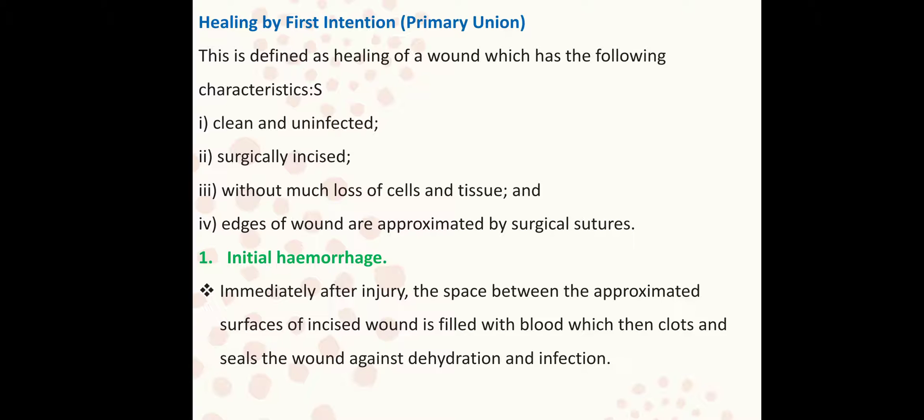There are five stages in healing by first intention. The first stage is initial hemorrhage. Hemorrhage means internal bleeding. Immediately after the injury, the space between the approximated surfaces of the wound is filled with blood, which then clots and seals the wound against dehydration and infection.